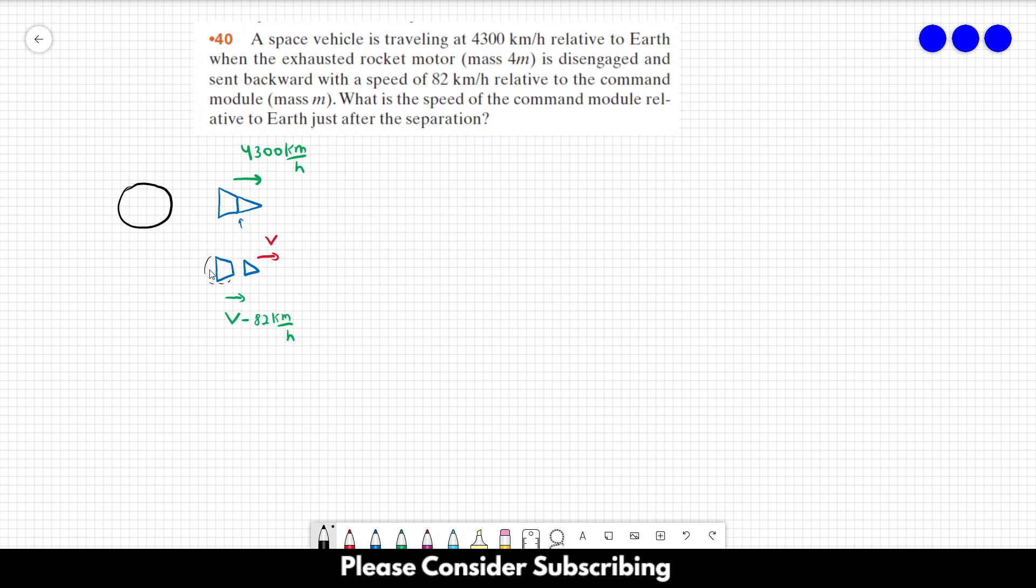Because one thing that you might think is that the command module is going to the left, the opposite direction, but that's not true because the initial speed is too high. The difference in speed is not enough to send it in the opposite direction. So we want to know this speed here, v.